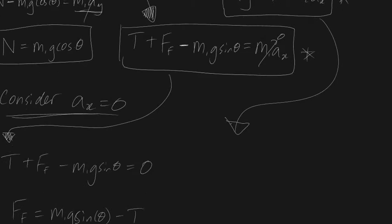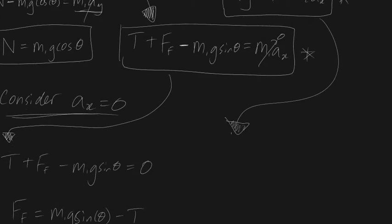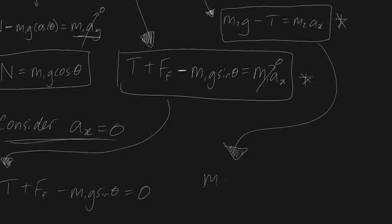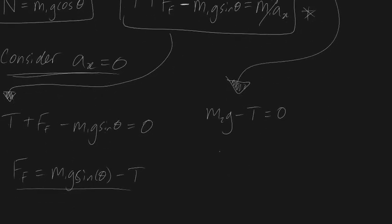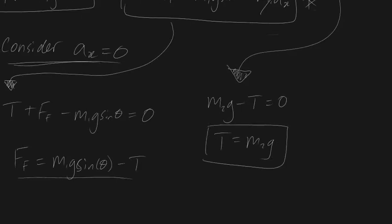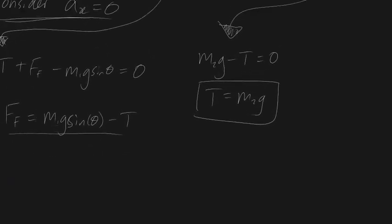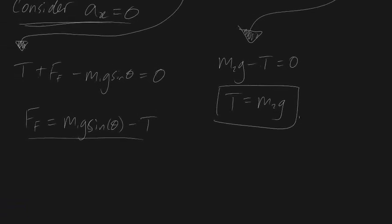In order for the block not to be moving downhill, ax is zero, meaning m2g minus T equals zero, implying that the tension T must equal m2g. We can now substitute T into our expression, giving us: friction force equals m1g sinθ minus m2g, in order for the block not to move downhill.